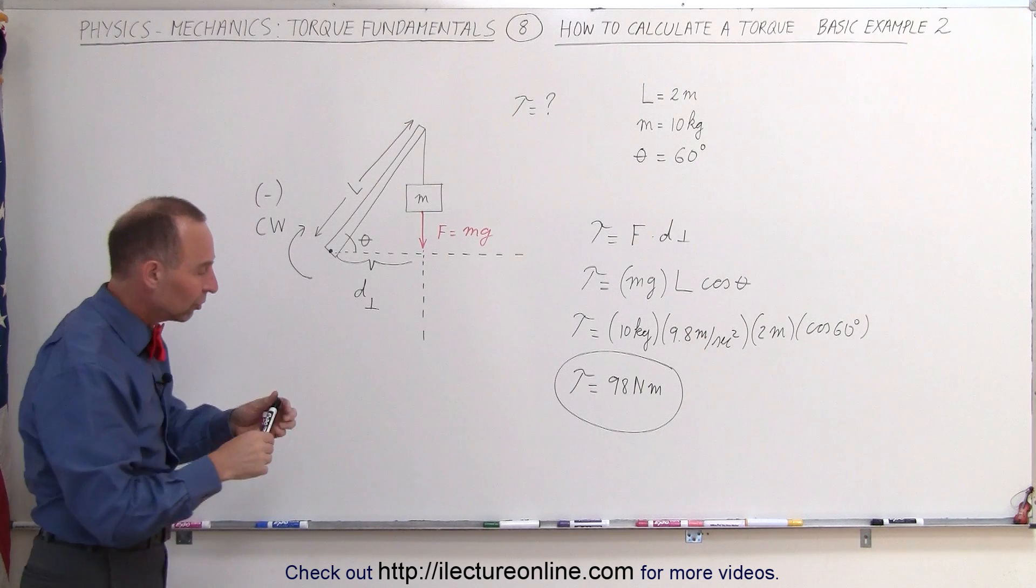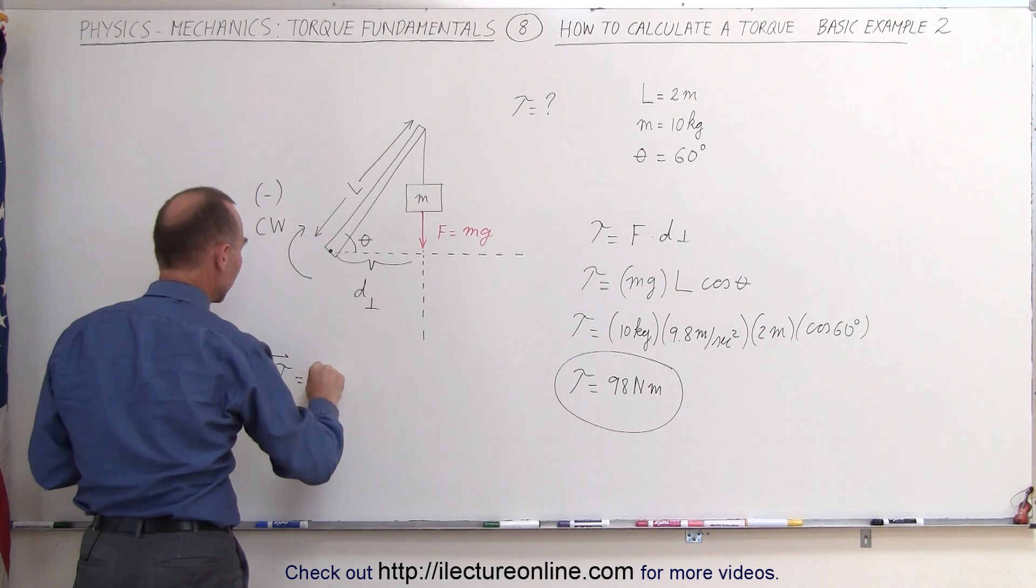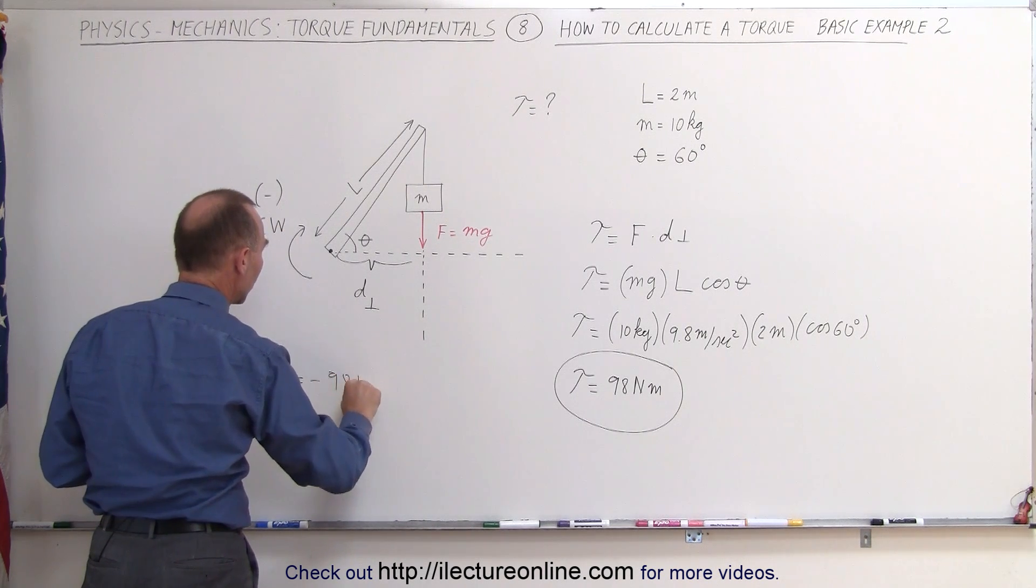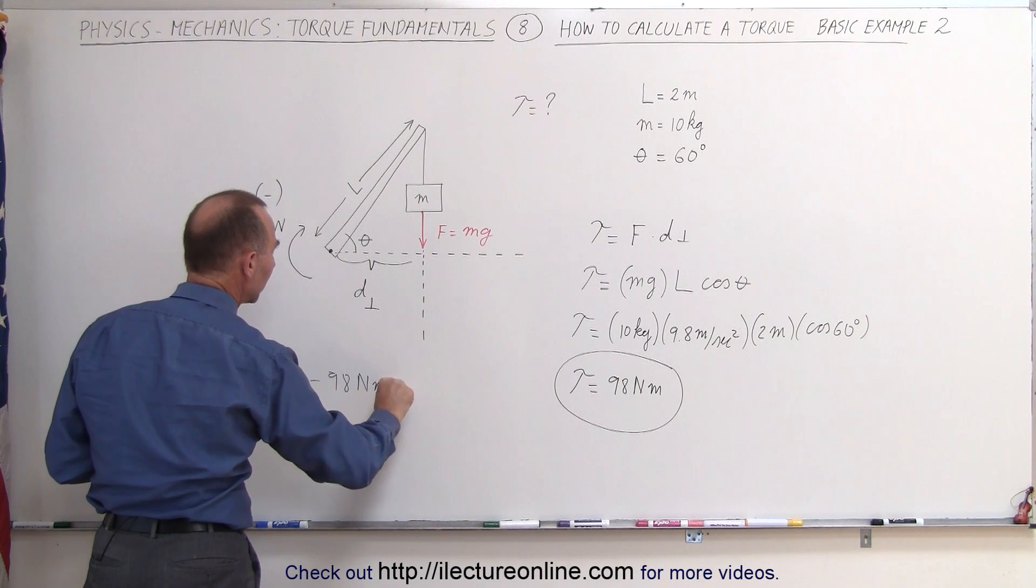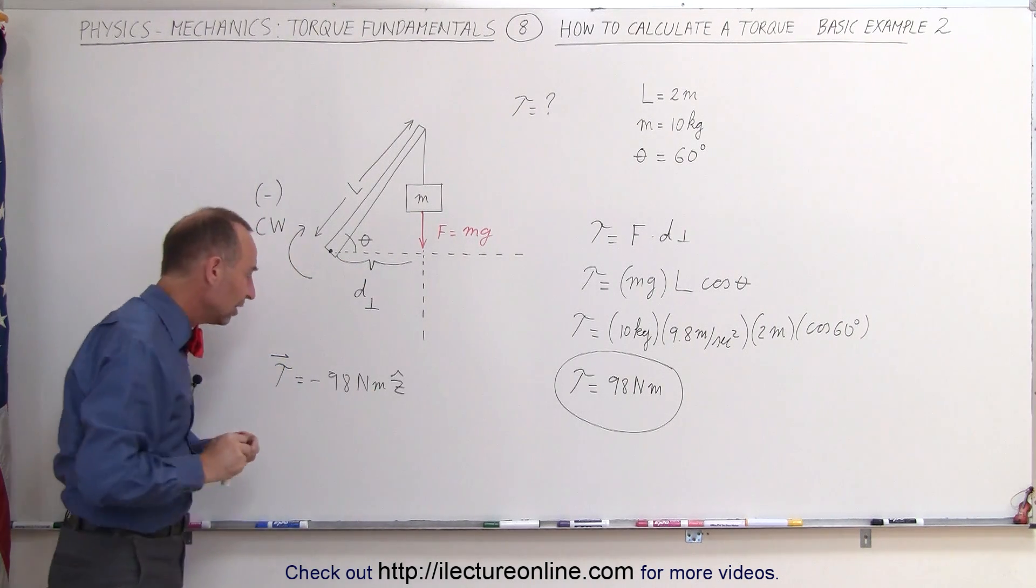Also, if we put it in vector notation, we can say that the torque is equal to minus 98 newton meters in the negative direction, into the board that would be into the negative z direction.